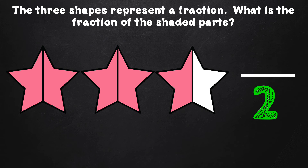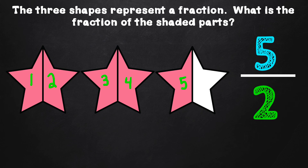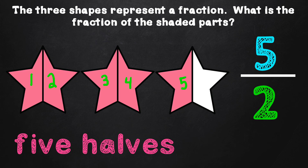Now we are going to determine or figure out the numerator. To do that, we are going to count all of the pieces that are shaded — it doesn't matter if it's in one shape or in the other; all of the pieces need to be counted together: one, two, three, four, five. Since there are a total of five pieces or parts that are shaded all together, the number five goes in the numerator because it represents the total number of parts shaded. The fraction for the shaded parts is five-halves.